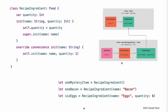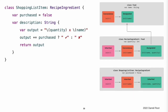All three of these initializers can be used to create new RecipeIngredient instances. The third and final class in the hierarchy is a subclass of RecipeIngredient called ShoppingListItem. The ShoppingListItem class models a RecipeIngredient as it appears in a shopping list. Every item in the shopping list starts out as unpurchased. To represent this fact, ShoppingListItem introduces a Boolean property called purchased with a default value of false.